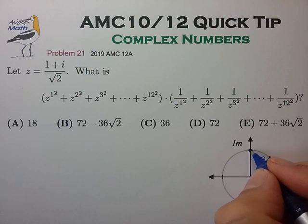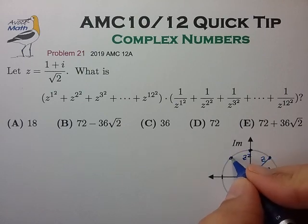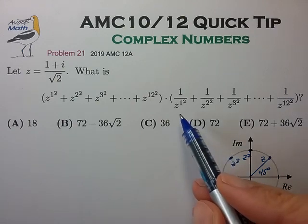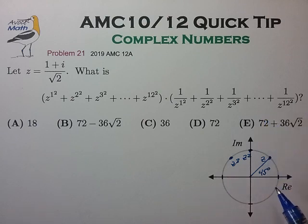So, for example, z squared, z cubed, etc. And more importantly, the reciprocal powers of z will also be on the unit circle and will map to the complex conjugates of their associated powers of z. So 1 over z will appear here, 1 over z squared will appear here, 1 over z cubed will appear here.